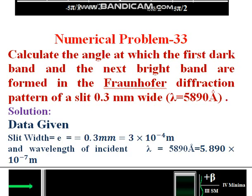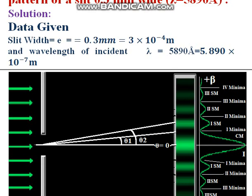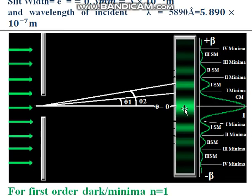Let's see numerical problem 33. The question is: calculate the angle at which the first dark band and the next bright band are formed. Looking at the figure, this is the central maxima. After the central maxima comes the first dark band, and then after that is the first bright band, known as the first secondary maxima.